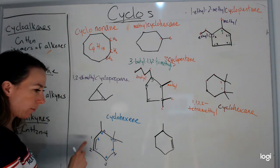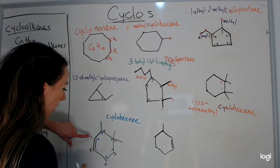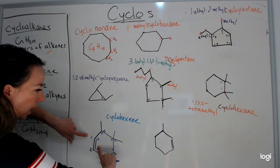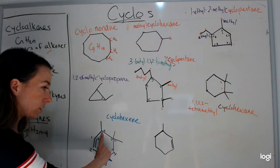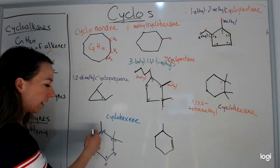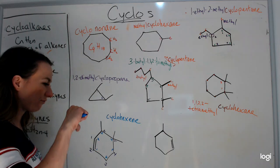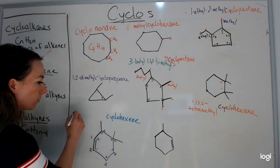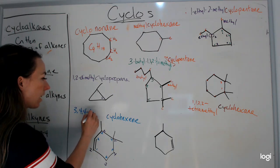So for this cyclohexene, I need to figure out whether to follow the purple or the blue numbering system — whichever hits my branches first. The blue numbering hits the branches on carbons 3 and 4, while the purple would put them on 5 and 6. So I follow the blue numbering system, and this is 3,4,4-trimethylcyclohexene.